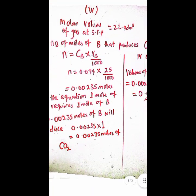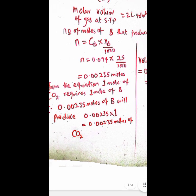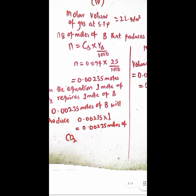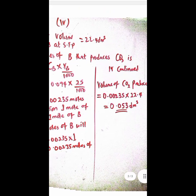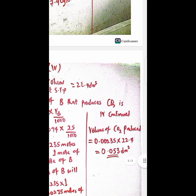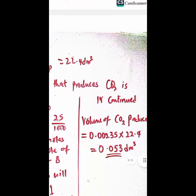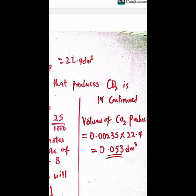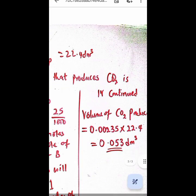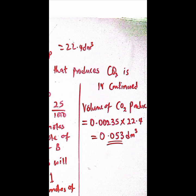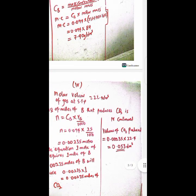So then since that is it, which means 0.0235 moles of CB which has been calculated here will equivalently produce 0.0235 moles of CO2. So then we take that into the formula which says volume of CO2 produced equals the number of moles of CO2 times the molar volume. So we got 0.053 dm cubed for the volume of CO2 produced.